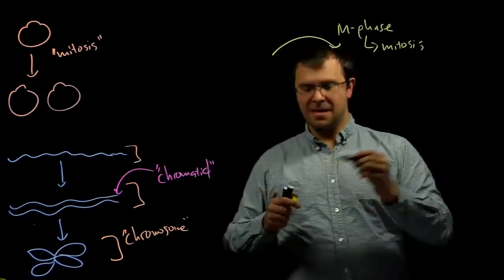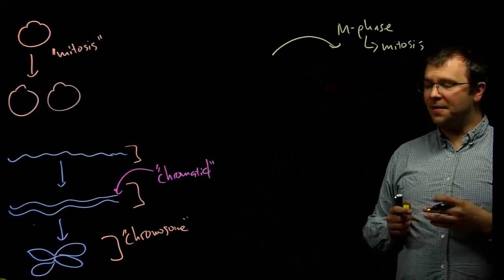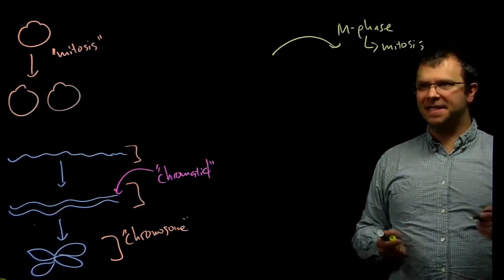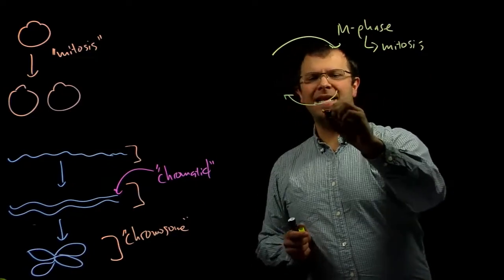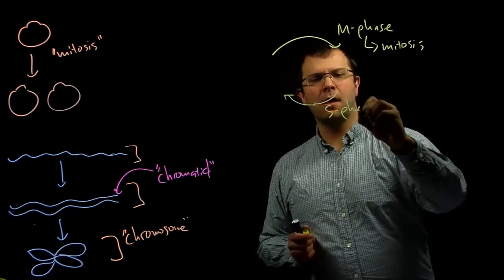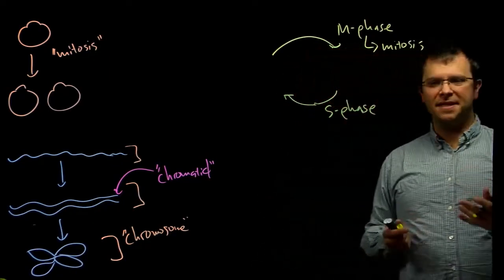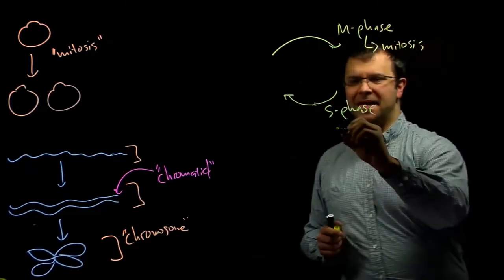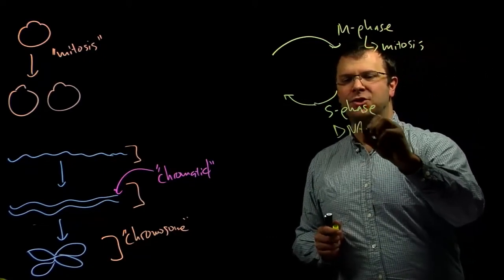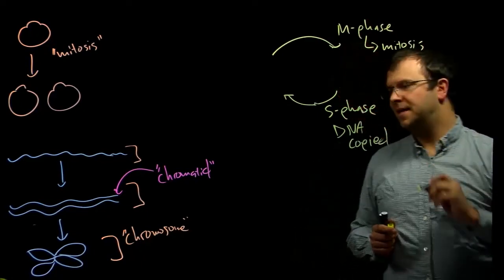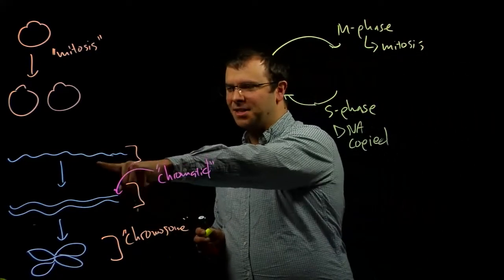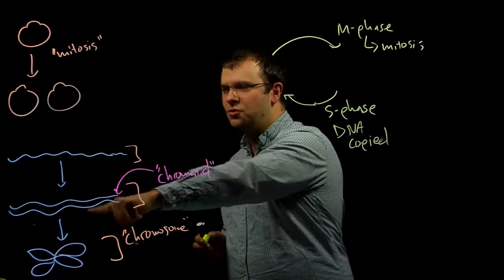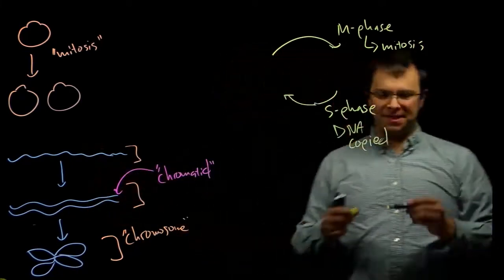And then there are three additional phases. There's an S phase. S is for synthesis. And in the S phase, the DNA is actually being copied. And so if we zip back over to this picture, the transition from one copy to two copies, this is happening during S phase.